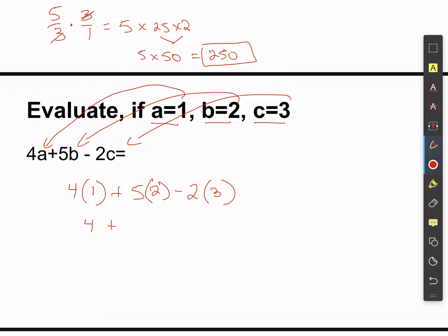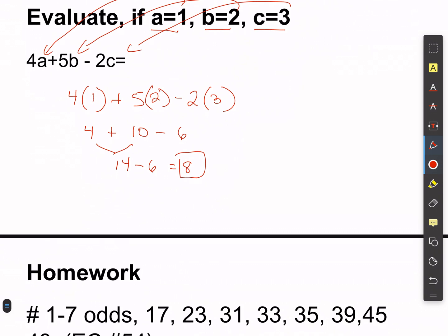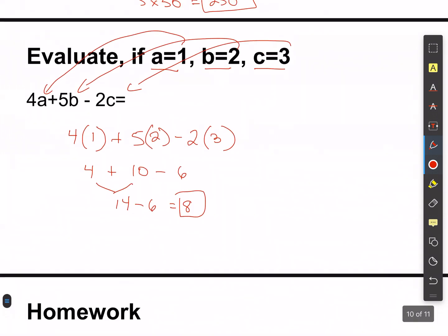Simplifying: 4 plus 10 minus 6. 4 plus 10 gives 14, and 14 minus 6 gives 8. That's all they want you to do — substitute in and then solve using your order of operations. Don't worry about the homework — I think I have a homework sheet for you. See you guys in class!